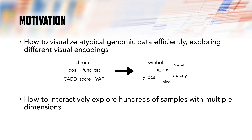Genome browsers such as IGV and UCSC couple the visual representation to specific file formats. The track types are rigid, offering few customization options for the visual encodings. Flexible tools exist for static plotting, but they are not interactive. So the question is, how to author novel interactive visualization designs for custom genomic data, and how to do it without having to write a lot of code for each new design?